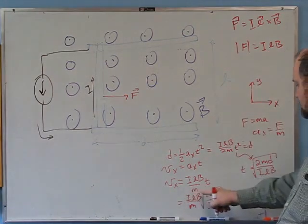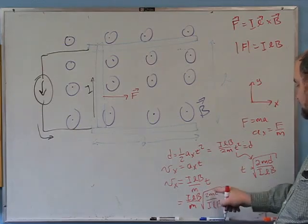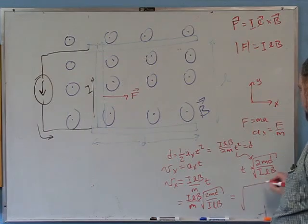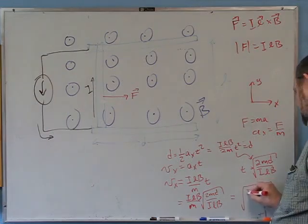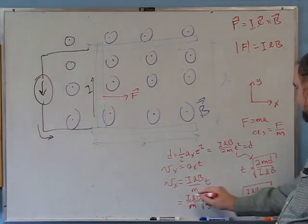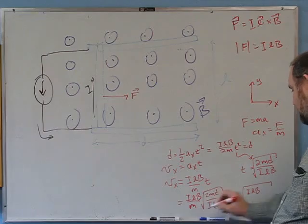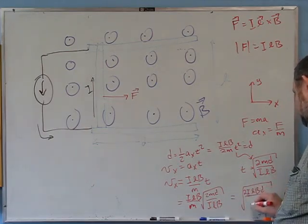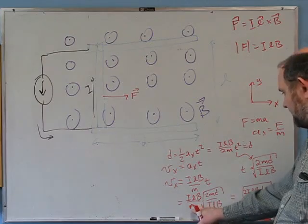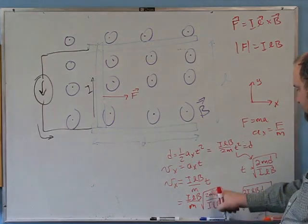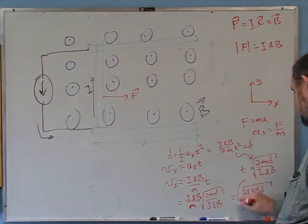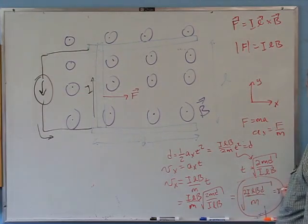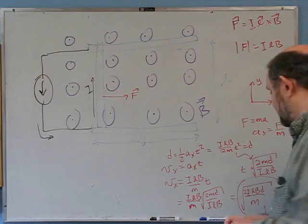Simplifying by pulling ILB/m inside the square root as (ILB)²/m², the result is Vx = √(2ILBd/m). So that is the speed we expect the slug to be going when it reaches the end.